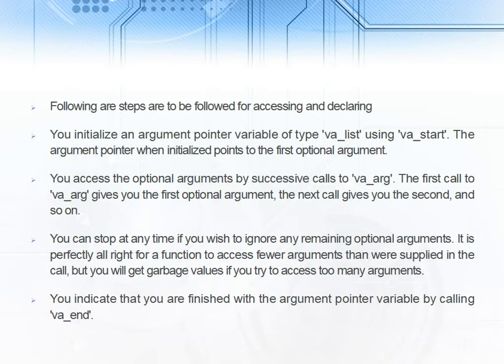And then you have to access the optional arguments by successive calls to va underscore arg. The first call to va underscore arg will give you the first optional argument, and similarly the next call gives you the second and it continues.